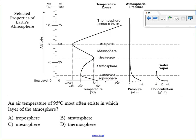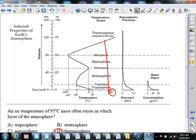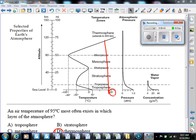The final question: an air temperature of 95 degrees Celsius most often exists in which layer of the atmosphere? On the chart, 100 degrees Celsius is in the thermosphere, so 95 degrees would be right around that same region — going all the way up, that layer is the thermosphere.